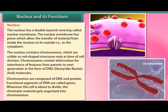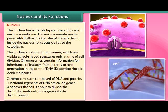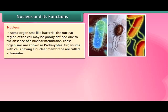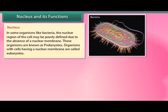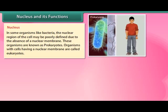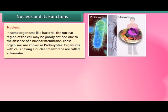Chromosomes are composed of DNA and protein. Functional segments of DNA are called genes. Whenever the cell is about to divide, the chromatin material gets organized into chromosomes. In some organisms like bacteria, the nuclear region may be poorly defined due to the absence of a nuclear membrane — these organisms are known as prokaryotes. Organisms with cells having a nuclear membrane are called eukaryotes.